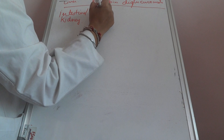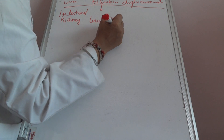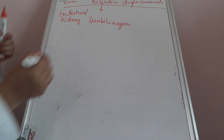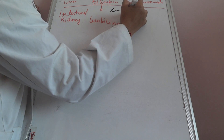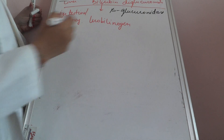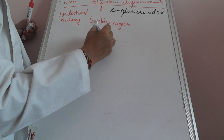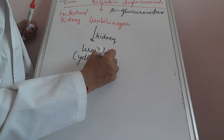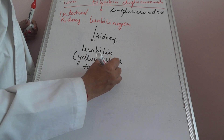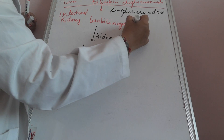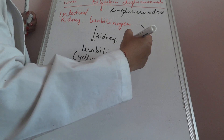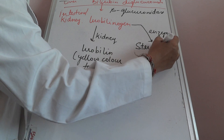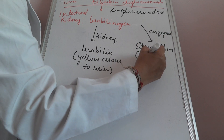Bilirubin diglucuronide forms urobilinogen in the presence of bacterial or microbial enzymes such as beta-glucuronidase. If this urobilinogen enters the kidney, it forms urobilin, which gives yellow colour to the urine. But if it does not enter the kidney and goes into the intestine, it is acted upon by other enzymes like glucuronidase to form stercobilinogen or stercobilin, which gives yellow colour to the feces.